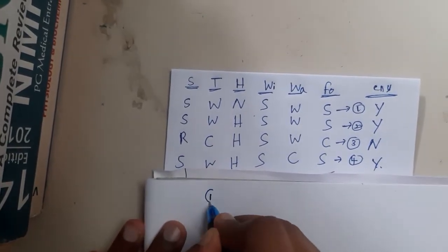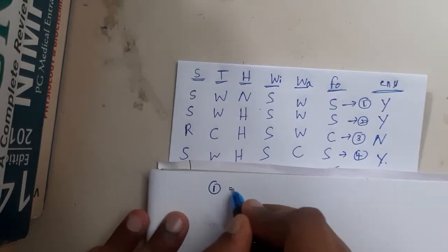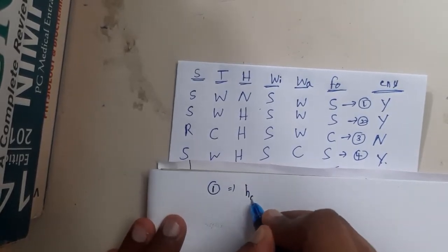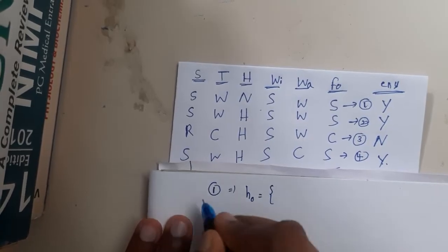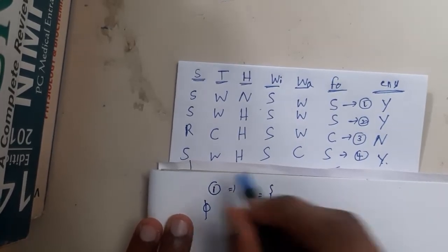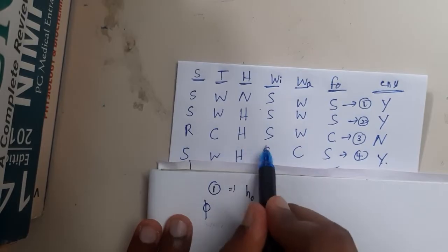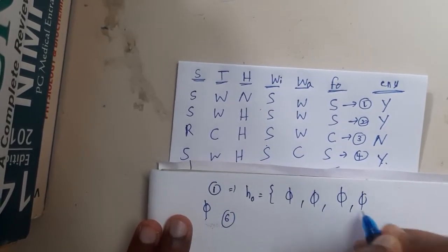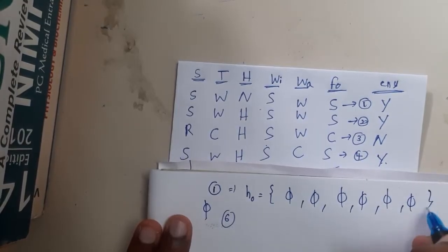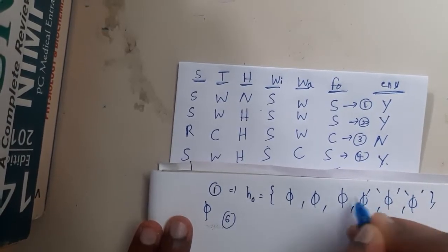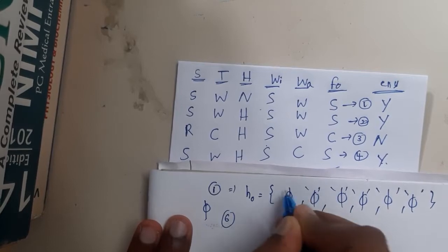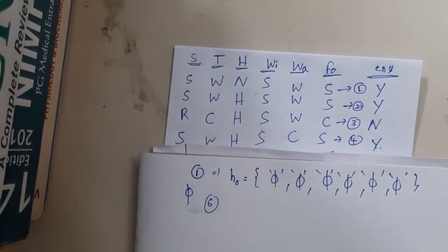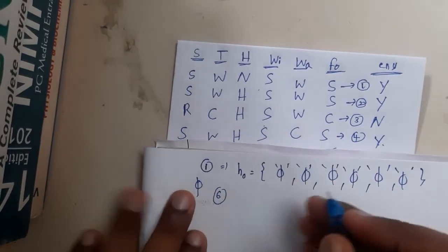The first step in Find-S algorithm is to write the most specific hypothesis h0. We denote it as h0 and use the null symbol (φ). Since we have six attributes, we write φ six times. In your examination, please keep the values in single quotes as most books follow that convention.